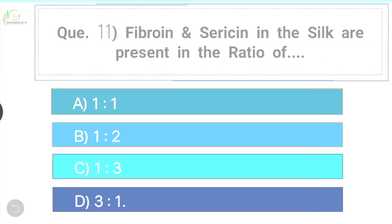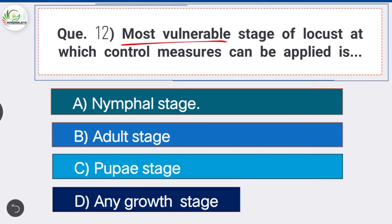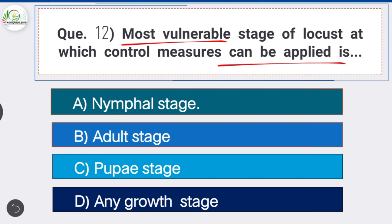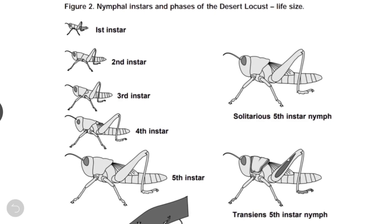Question 12: The most vulnerable stage of locust at which control measures can be applied is Option B, the correct answer: nymphal stage. Locust eggs generally hatch about two weeks after being laid. The baby locusts, referred to as hoppers or nymphs, go through five molting stages called instars over the next one to two months. After the fifth instar, the locust wings are fully developed.